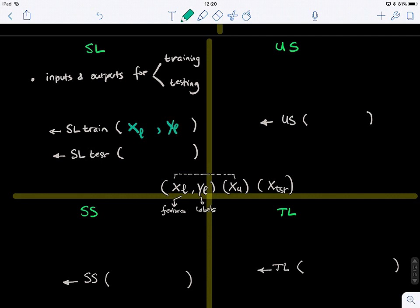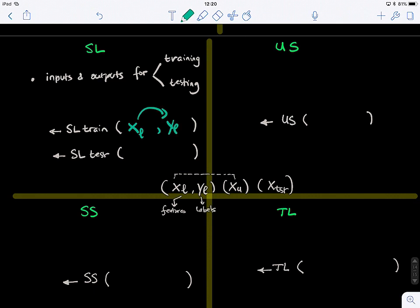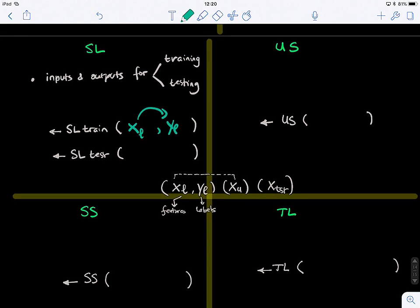So it learned the mapping from the feature data to the target label. And what is the output here? It's the parameters of the model. So let's call the parameters of the model that you learned when you're optimizing W, right? This is during training.